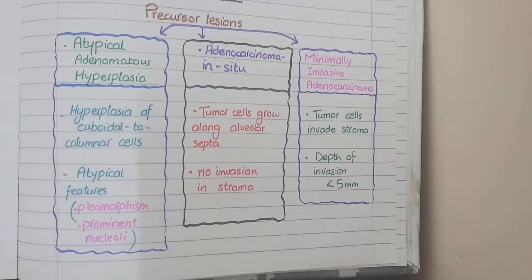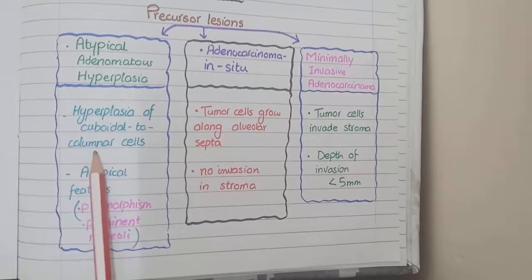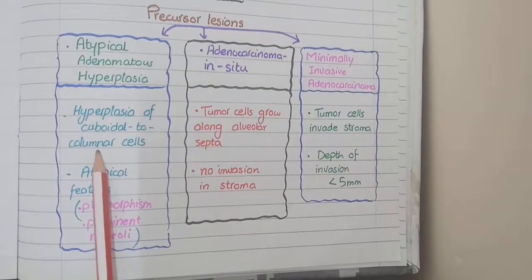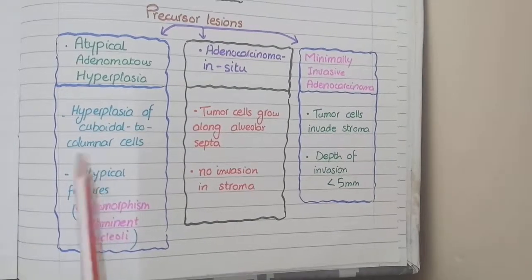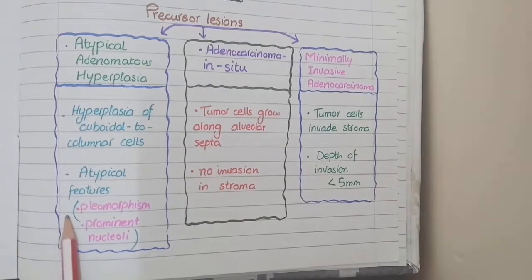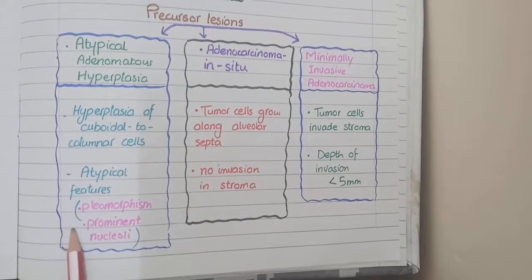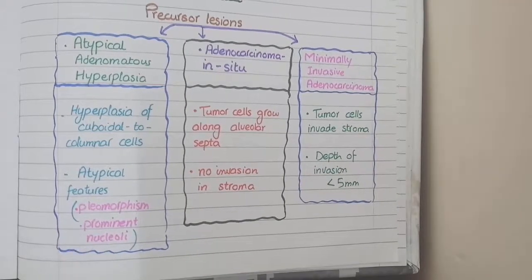The first precursor lesion is atypical adenomatous hyperplasia. Hyperplasia means there will be an increase in number of cuboidal or columnar cells along the lining of the alveoli. The word atypical means you will see some atypical cellular features such as pleomorphism and prominent nucleoli.